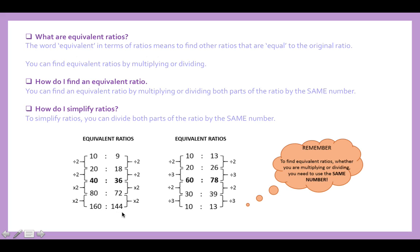If you had 160 to 144 and wanted to simplify it to its simplest form, you could divide by 16 to get 10 to 9. Similarly, starting with 60 to 78, you could divide by three to get 20 to 26, which is equivalent. Or if you wanted the simplest form, you could divide by six to give you 10 to 13. Whether multiplying or dividing, you must use the same number for both parts.